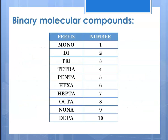The prefixes we use for binary molecular compounds are shown in this table. We hold you responsible for the prefixes from 1 through 10: mono, di, tri, tetra, penta, hexa, hepta, octa, nona, and deca. These are different prefixes than we use when naming the number of carbons in a chain of hydrocarbons. For organic compounds, you'll recall for 1 through 10 we used meth, eth, prop, but, et cetera. For binary molecular compounds, we use this separate set of prefixes.